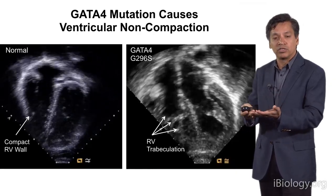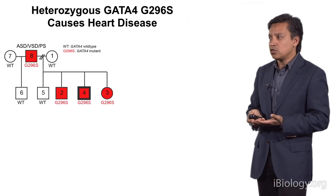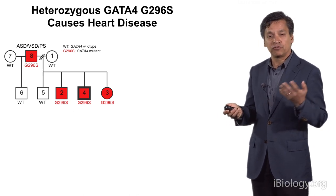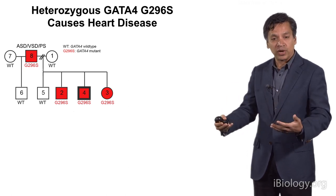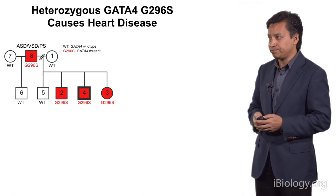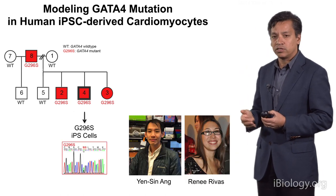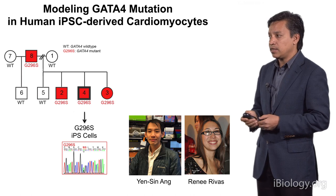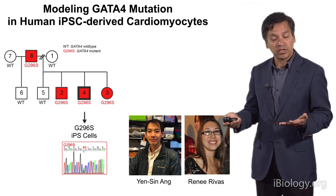This problem is often thought of as reflecting immaturity of the muscle cells, and so we thought we might actually be able to see if that's happening in their iPS-derived cardiomyocytes. We generated iPS cells from these family members — eight individuals, four with the mutation and four without. We took skin biopsies, transformed them into stem cells, and then into the beating cardiomyocytes I showed you earlier. This work was done by two talented trainees in the laboratory: Jensen Ang, a postdoc, and Renee Rivas, an MD-PhD student.